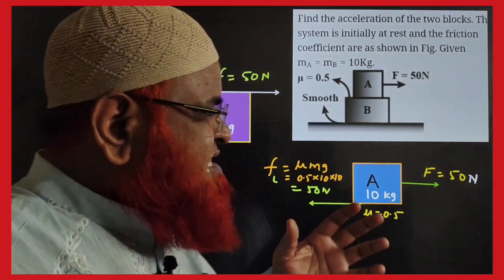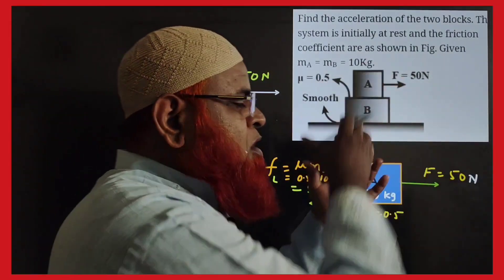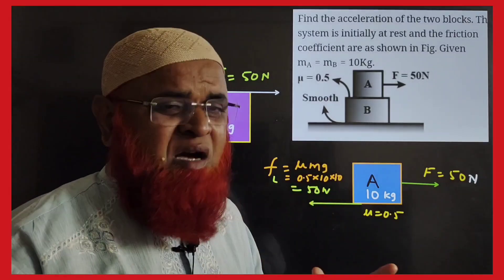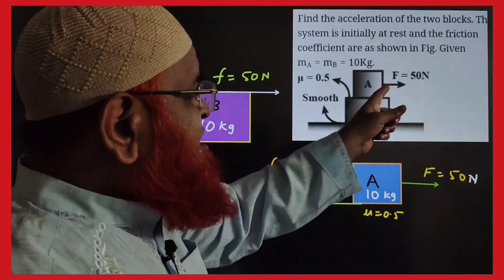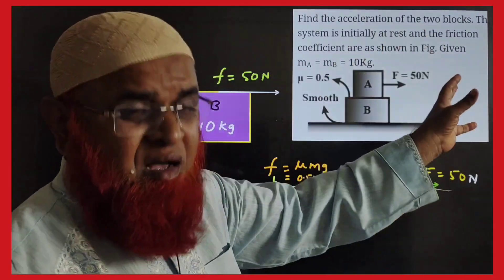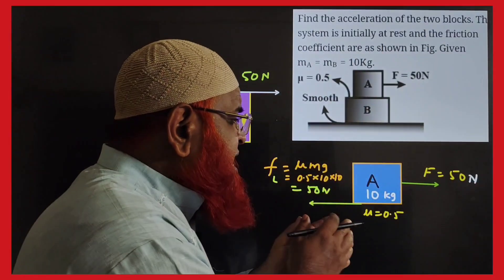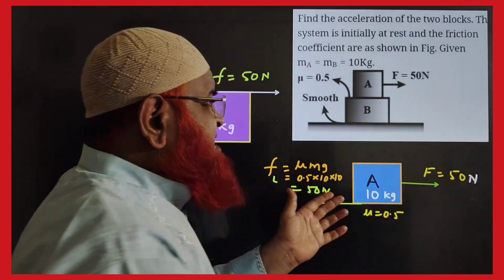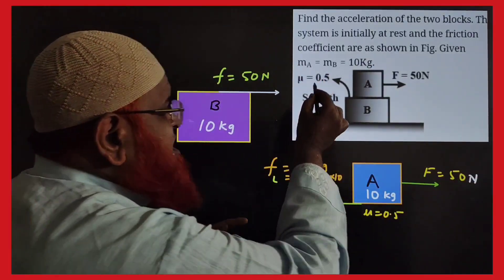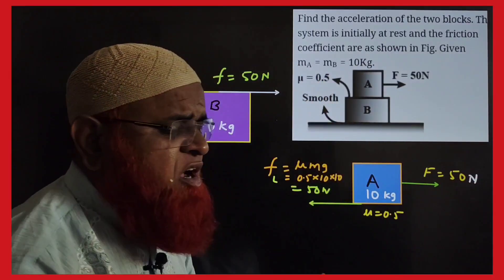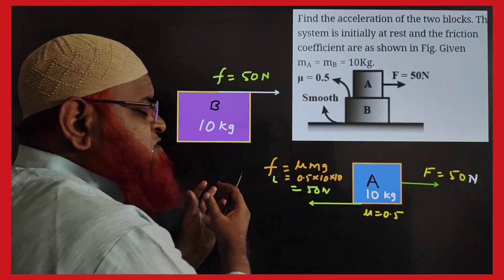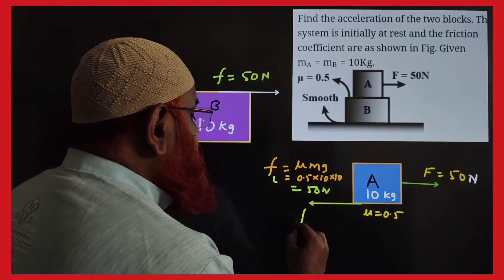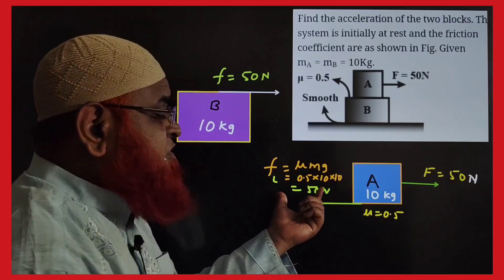My dear students, this is a block over block concept of friction. You can see these two blocks have the same masses and force is applied on the upper mass. Taking the free body diagram of the upper body separately, friction acts in this direction as the coefficient of friction is 0.5. Limiting friction acts in the left side direction, equal to μmg, which is 50 N.